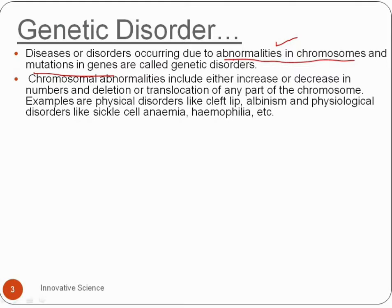Chromosomal abnormalities include either an increase or decrease in number, or deletion or translocation of any part of the chromosome. For example, humans have a constant chromosome number of 46.